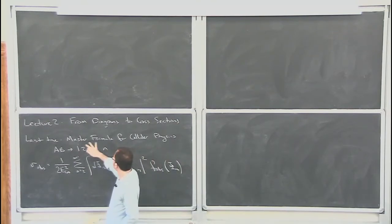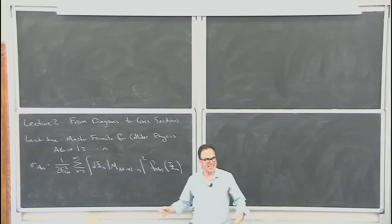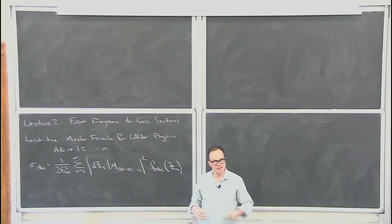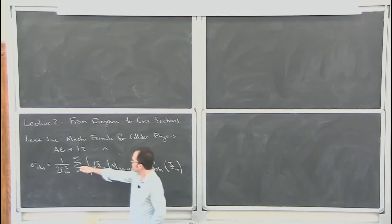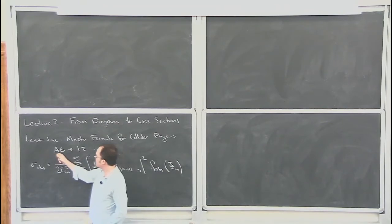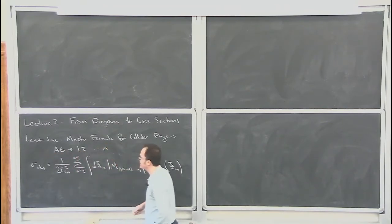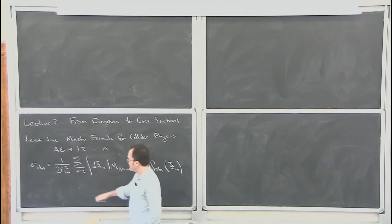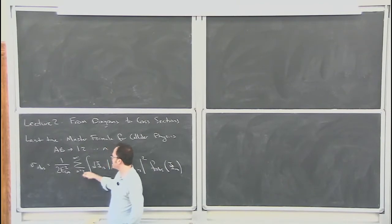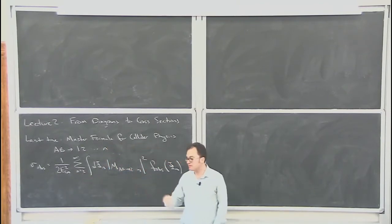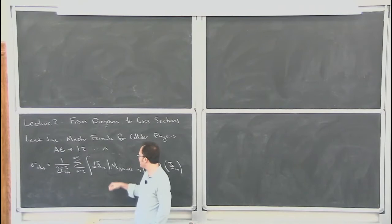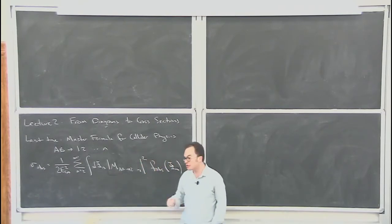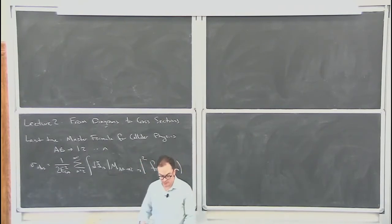Last time, I introduced the master formula for collider physics. Everything that we're going to do for the remainder of these lectures in some ways traces back to this. For the scattering of beams A and B to make some number of final states, we have an overall geometric factor. We have to sum over all possible numbers of final states and integrate over Lorentz invariant phase space times the amplitude. And then crucially, we have to choose what observable we want to measure.